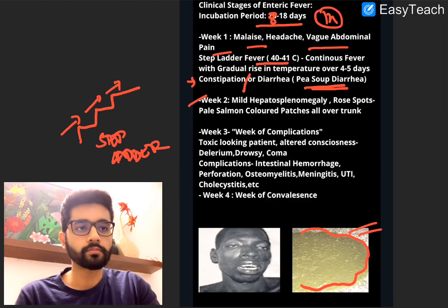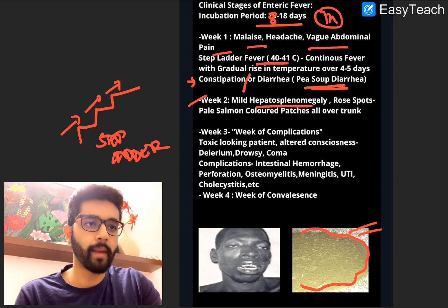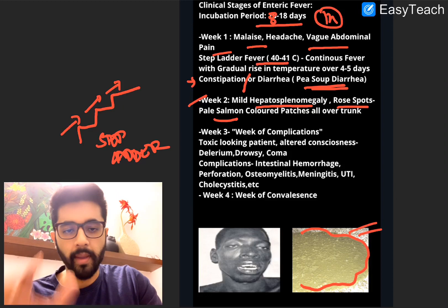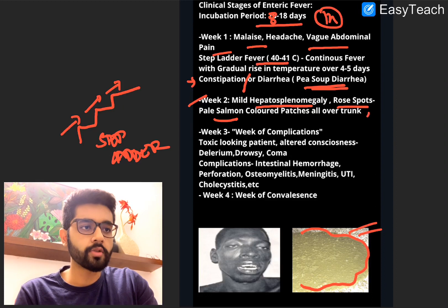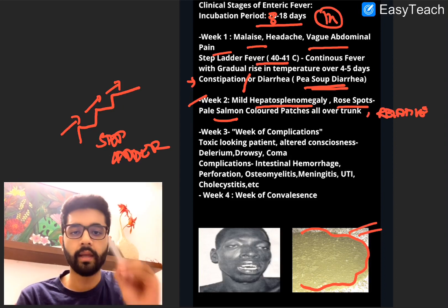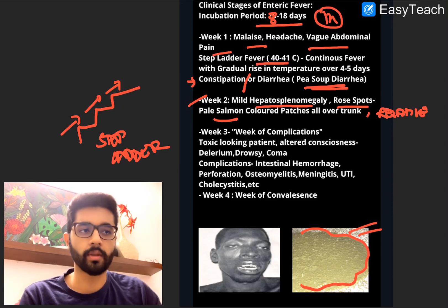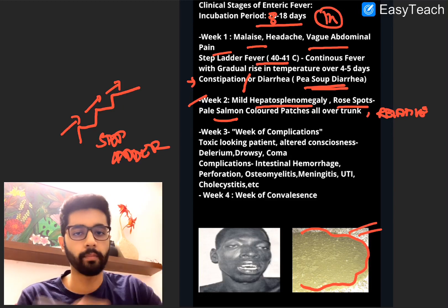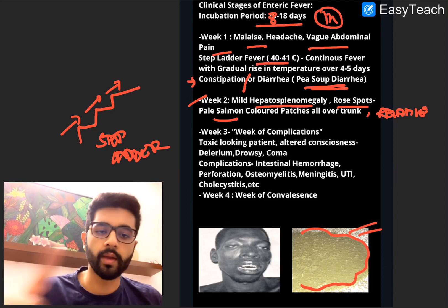In week 2, it's more of examination findings that you notice. Firstly, you can have mild hepatosplenomegaly. Rose spots can be seen — these are nothing but pale salmon-coloured patches present all over the trunk. And you can also have a relative bradycardia. Normally, when the temperature rises, the pulse also goes up. But in typhoid, the pulse doesn't go up proportionate to the rise in temperature — so it's called relative bradycardia.